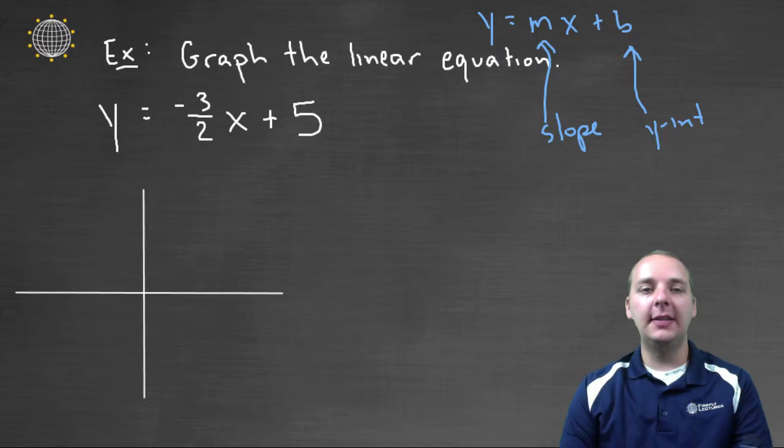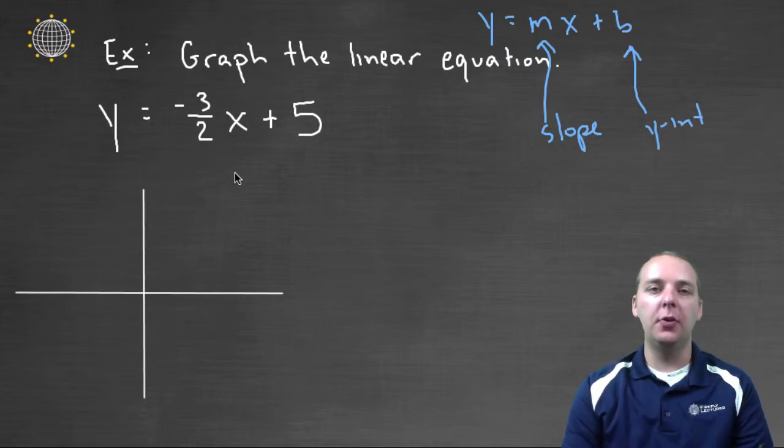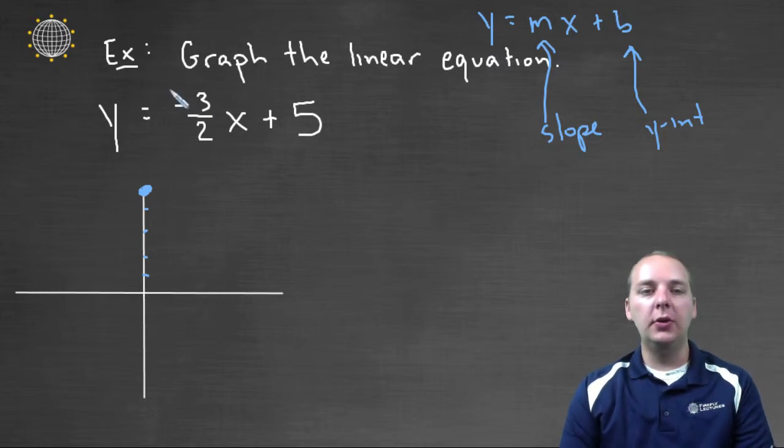So if you remember the steps of how to graph a line written in slope-intercept form, it goes something like this. You start by plotting the y-intercept, so we'll start by plotting one, two, three, four, five, because we know that the graph goes through that point on the y-axis.